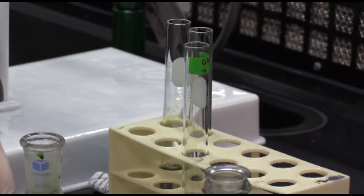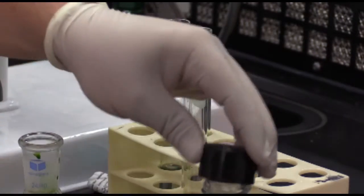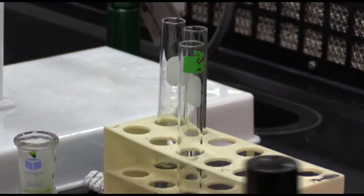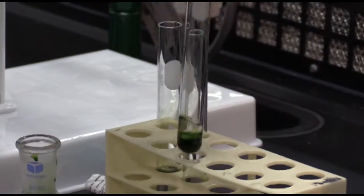Take off the bulb, place the pasteur pipette back down, close the pet ether, move that to the side, and grab the test tube.